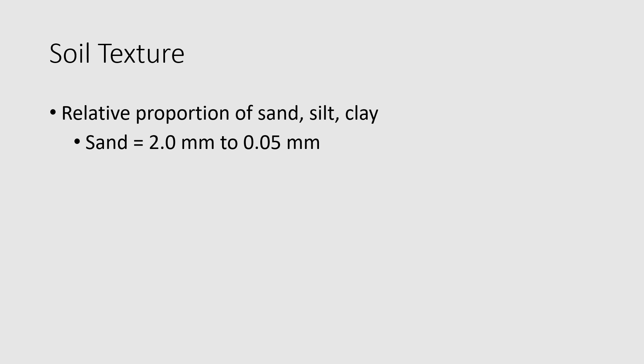Sands are gritty and rough when you feel them. Silts are the intermediate-sized particles — you can see the biggest ones with your eyes if you have good eyesight, but the smallest ones are impossible to see without a microscope. Silts feel smooth, kind of like baby powder or powdered sugar.